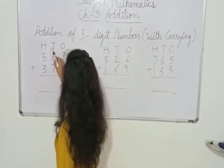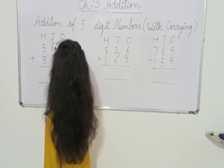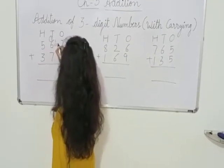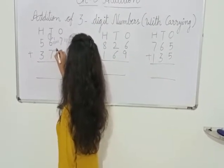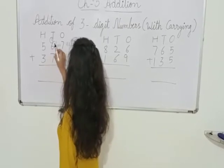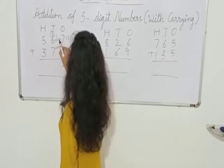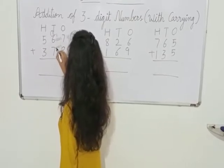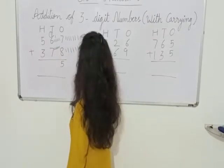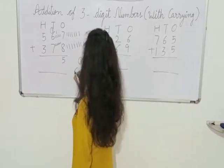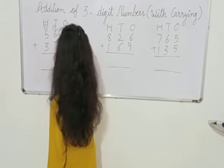Now for the 10's place: 1 is carried, we draw 1 line. Then 6 lines: 1, 2, 3, 4, 5, 6. Then 7 more lines: 1, 2, 3, 4, 5, 6, 7. Now let's count all lines: 1, 2, 3, 4, 5, 6, 7, 8, 9, 10, 11, 12, 13, 14. So here we have 14. We carry forward this 1 to the 100's place, and write 4 at the 10's place.